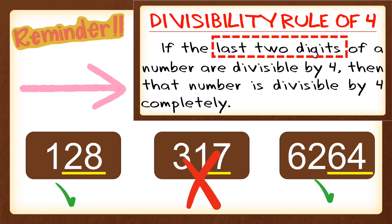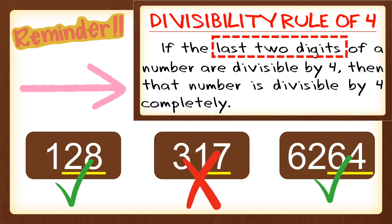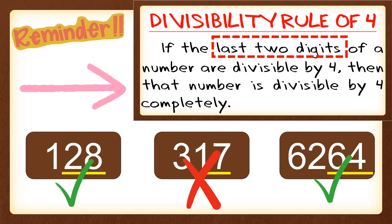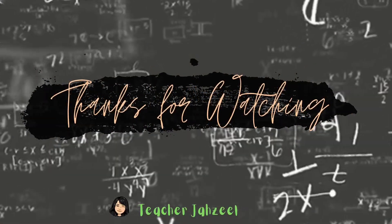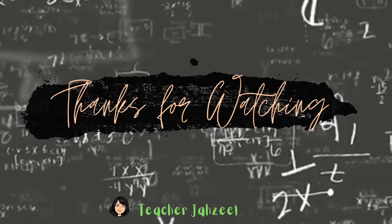Reminder: in the divisibility rule of 4, we're just going to look at the last two digits and determine if it is a multiple of or divisible by 4. Then that number is also divisible by 4 — or not. Don't forget: happy learning, because mathematics is fun! Thank you!